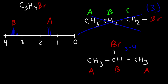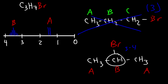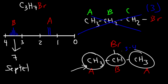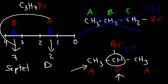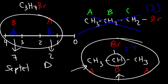Now let's look at the splitting pattern. The CH group is adjacent to six hydrogen atoms, so using the n+1 rule, we get seven peaks — a septet. For the methyl group, since these two methyls are identical, we focus on one at a time. It is adjacent to only one hydrogen atom, so one plus one is two — we get a doublet, visible around 1.4–1.5 ppm. This confirms the structure is 2-bromopropane, also called isopropyl bromide.